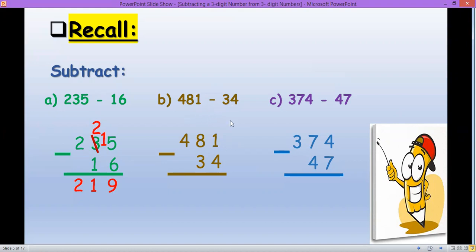481 minus 34. Basically one minus four - one is smaller than four, so one will borrow from eight. One will become 11 because the actual value that it borrows is not actually one, but 10. And eight will become seven. So 11 minus four is seven, seven minus three is four, and then we bring down four.